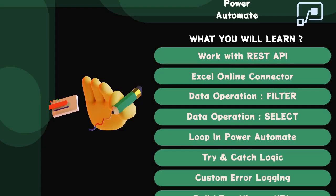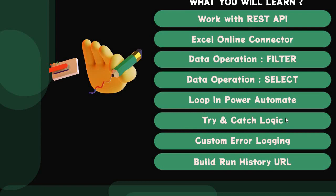In this session we learned how to implement try-catch logic in Power Automate. In the next session I'll show you how to build the run history URL, and after that I'll explain how to implement a custom logging mechanism, because Power Automate run history is only available for 28 days. If you need it for audit purposes beyond that, you'll need a custom logging solution. See you in the next session — bye!